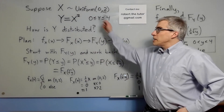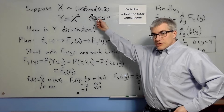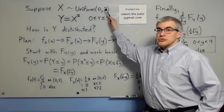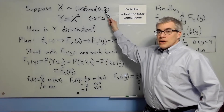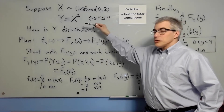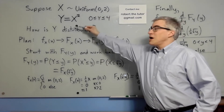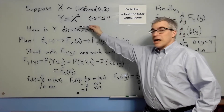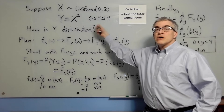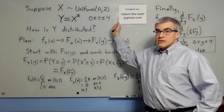Suppose you have a random variable x and you know its distribution, and you would like to know the distribution of y, which is x squared — a function of x.